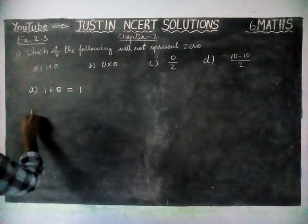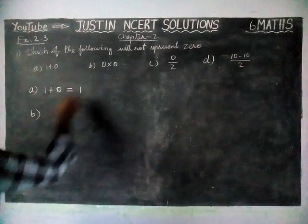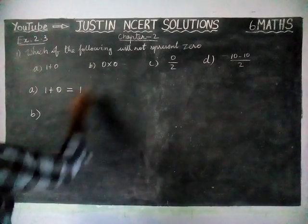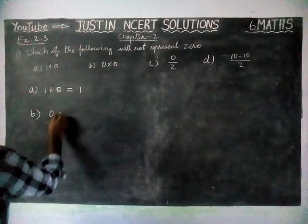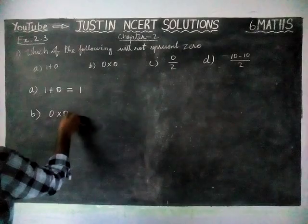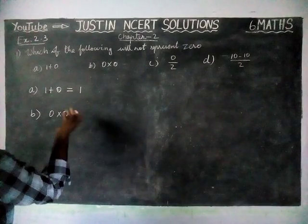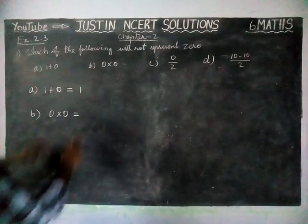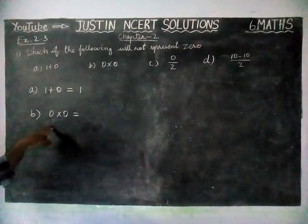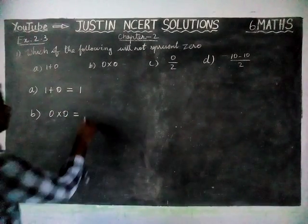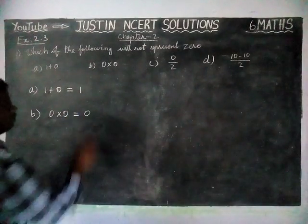Option B: 0 into 0 — when we are multiplying 0 with any number, we will get 0 only. Here we have two 0s, so the answer is 0.